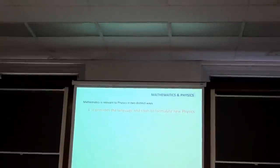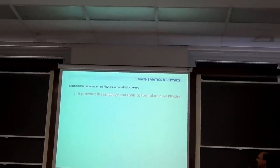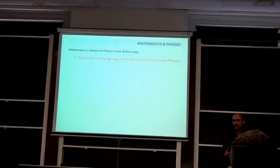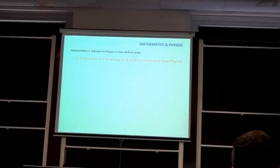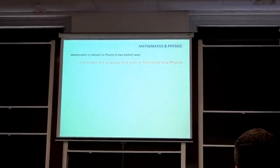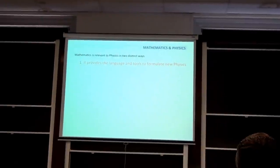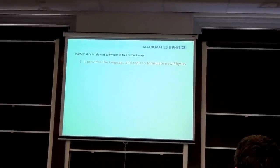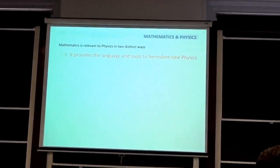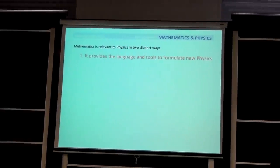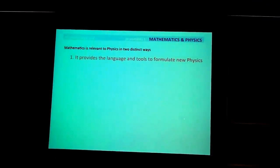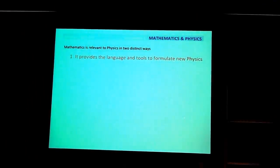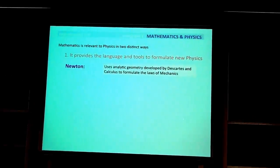I'd like to discuss a little bit about what are the relations between mathematics and physics at some level. Obviously, one way in which mathematics is very relevant to physics, as everybody knows, is that it provides a language and tools to formulate new physics. We have a lot of examples of this, starting with Newton.